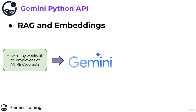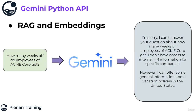Acme Core is just a company that Gemini doesn't really know about — you could replace this with something like Salesforce or Microsoft, etc. Most likely you're going to get just the default answer. It can't answer questions about how many weeks off employees get at a specific corporation; it doesn't have access to internal HR information for specific companies. Maybe it just tries to generalize and offer general information about vacation policies in the United States or other countries.